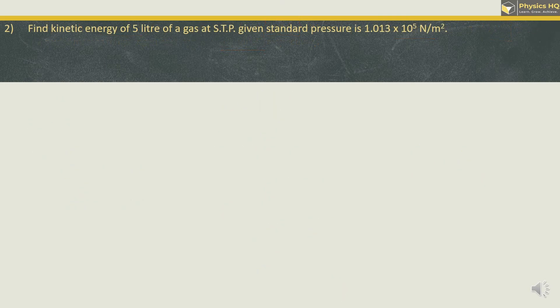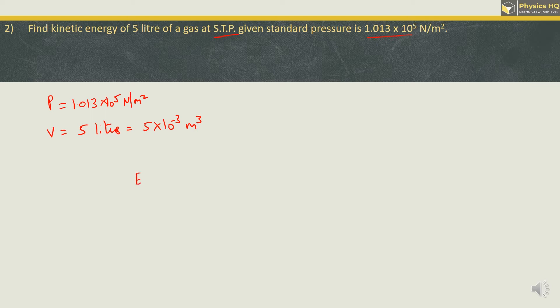Next example: Find the kinetic energy of 5 litres of gas at standard temperature and pressure, given standard pressure = 1.013 × 10⁵ N/m². Volume is 5 litres; to convert litres to m³, multiply by 10⁻³, so V = 5 × 10⁻³ m³. The formula for energy is E = (3/2)PV = (3/2) × 1.013 × 10⁵ × 5 × 10⁻³.